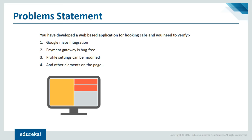Let's talk about why Selenium is needed and the need for automation testing. Consider a web-based application for booking cabs — like Uber or Ola. It would have a maps integration, a bug-free payment gateway, profile settings where you can set your name, link bank details, set a default address, and more. All the features in that application need to work perfectly.